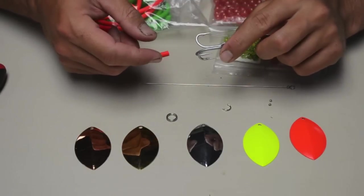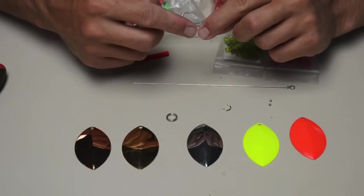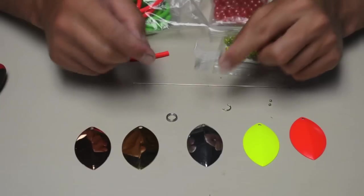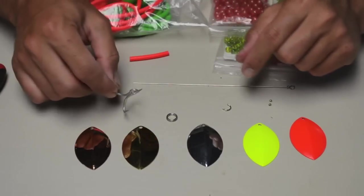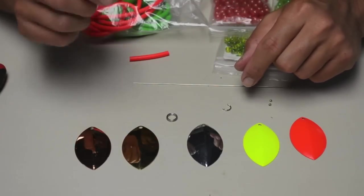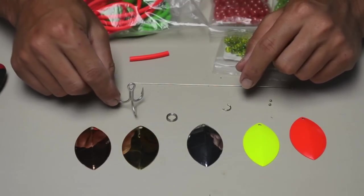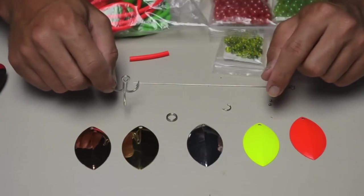The barbs pinch down fairly readily for those fisheries that have barb restrictions. I really like this hook, it's pretty heavy duty, it's not going to break or bend. And those cost about $0.65 a piece.